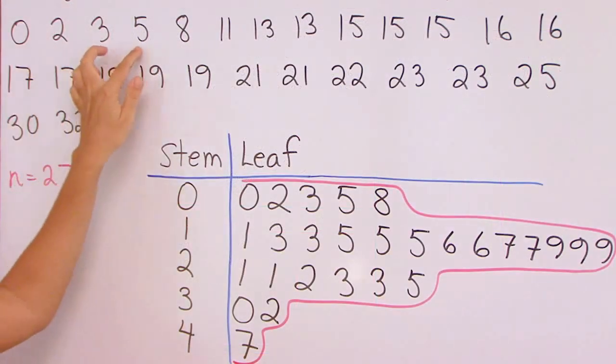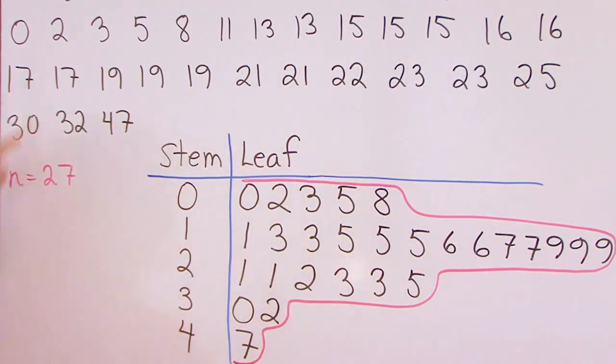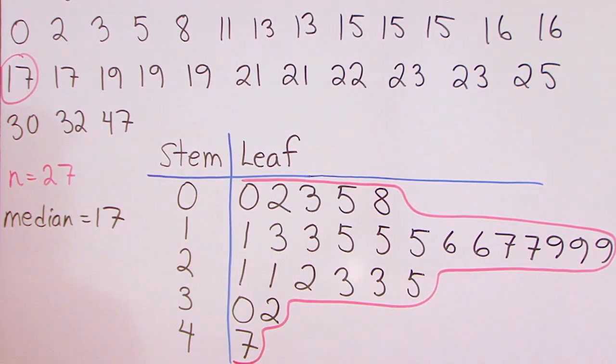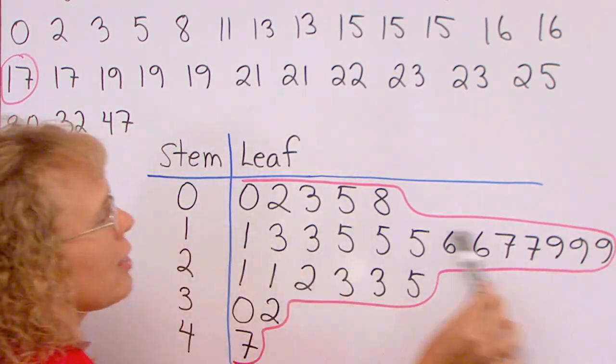So one, two, three, four, five, six, seven, eight, nine, ten, eleven, twelve, thirteen, fourteen. This is the median, seventeen. And it fits here into the peak of the data.